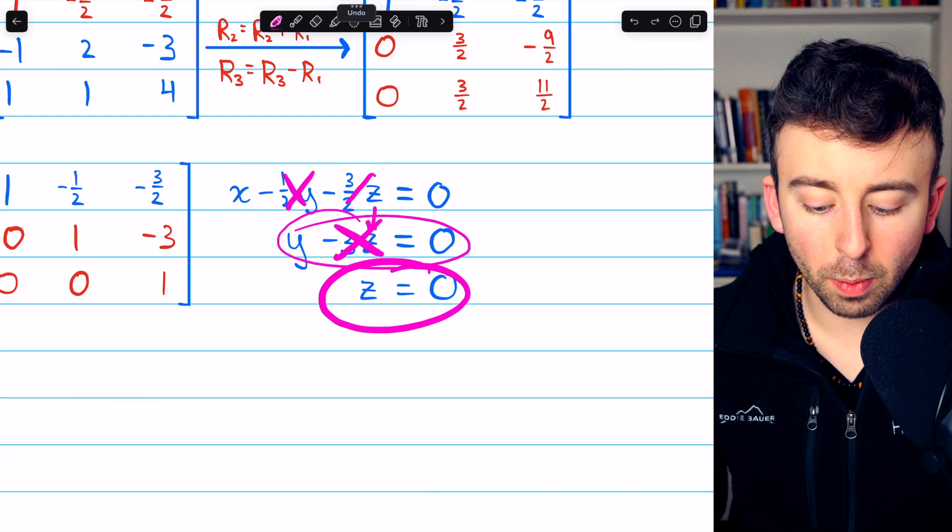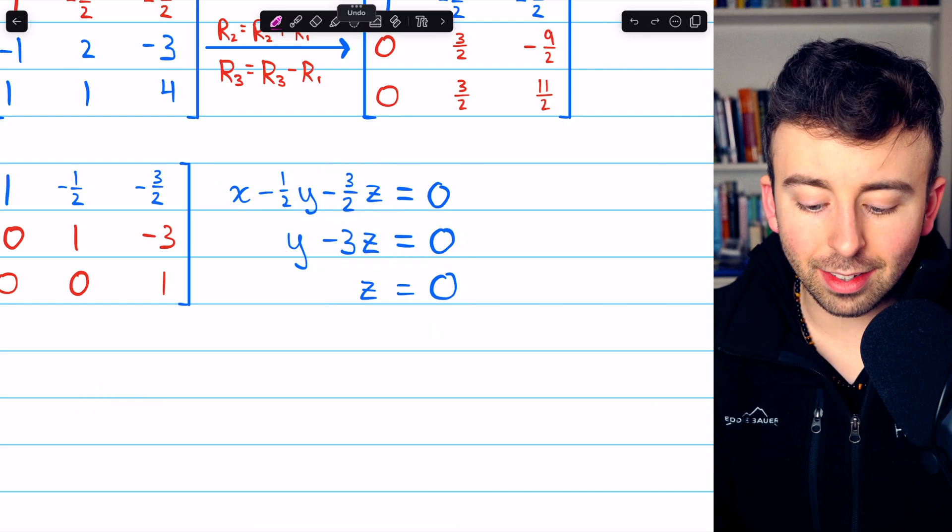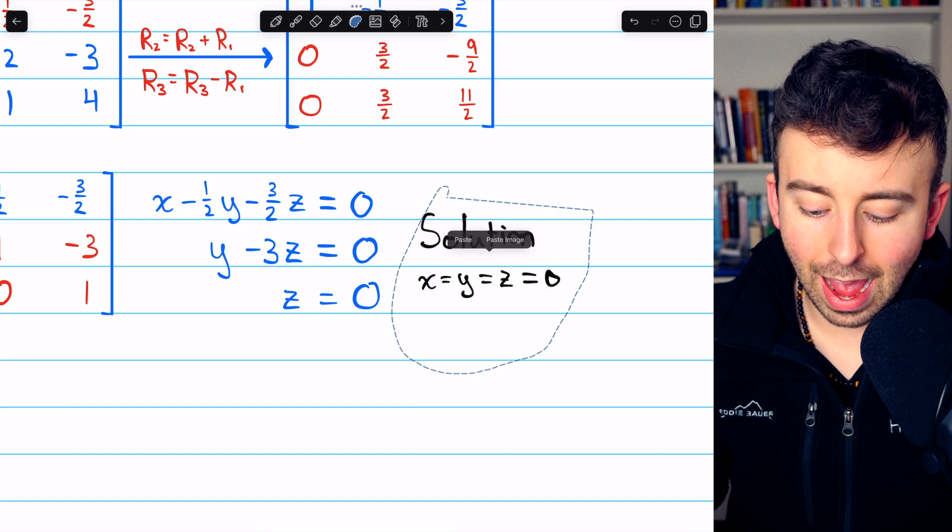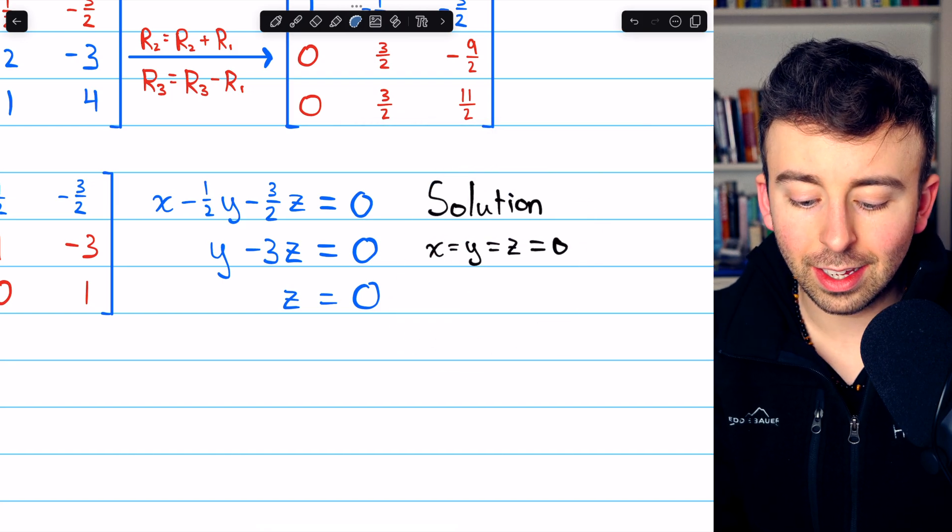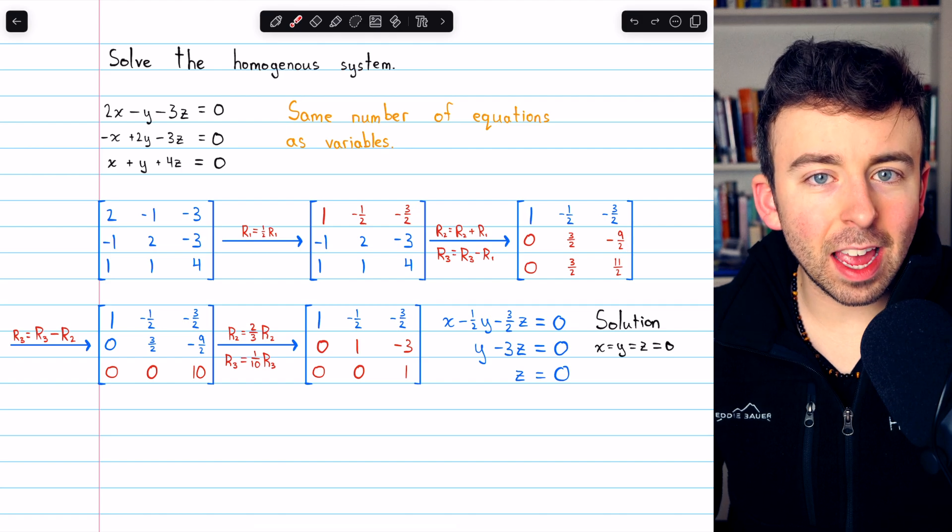So in fact, the only solution to this homogeneous system is the trivial solution: x equals y equals z equals zero.